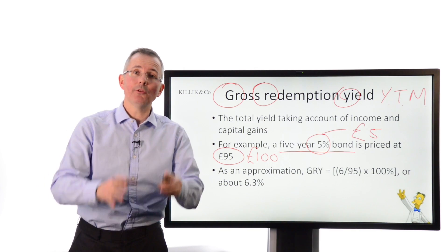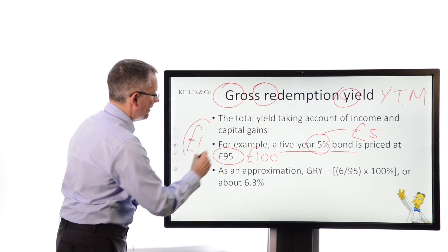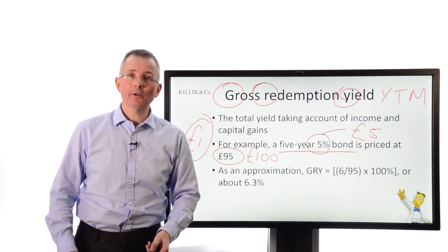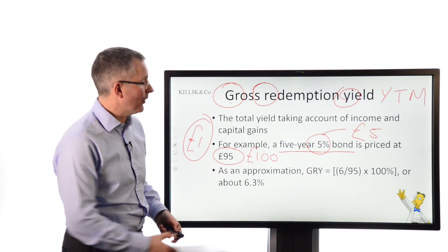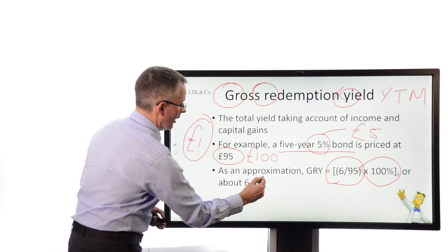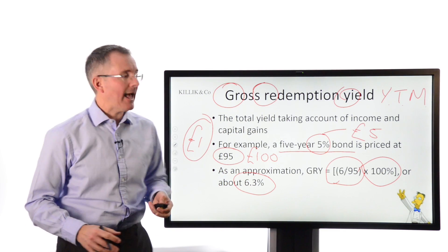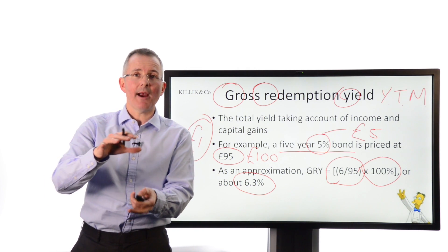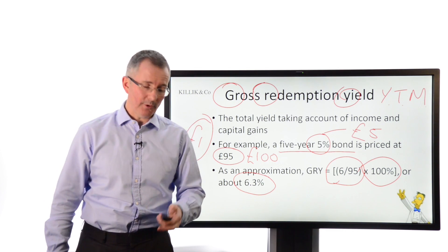We also have to factor in the capital gain: if you buy at £95 and it redeems in five years at its nominal value of £100, you're making roughly £1 a year extra. So very roughly — ignoring time value of money — you add five plus one to get six, put it over the current price, and get approximately 6.3%. When we talk about credit and yield spreads, we compare that number for one bond against another bond with similar maturity but a different risk profile — and ask what that tells us as investors, not just bond investors but equity investors too.